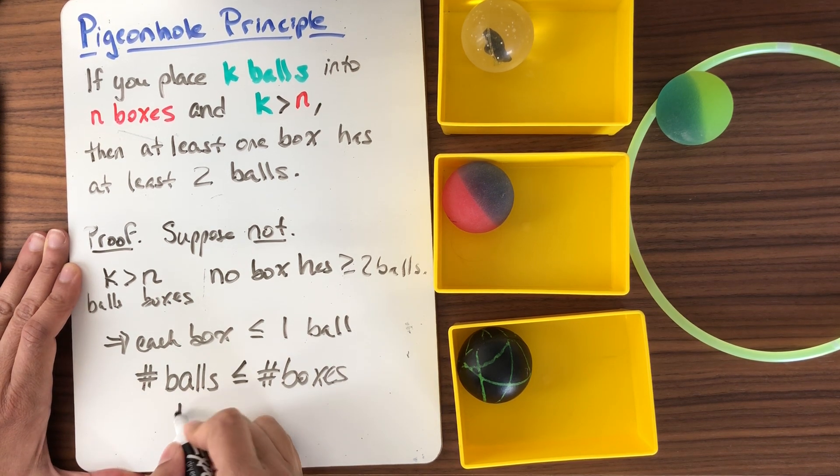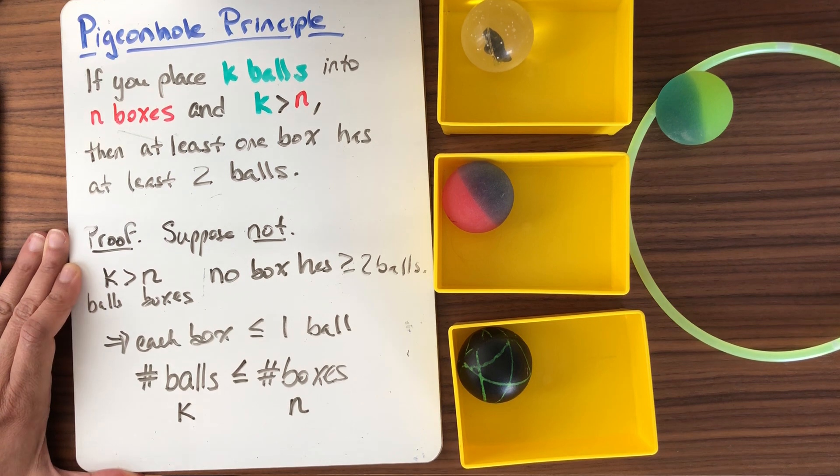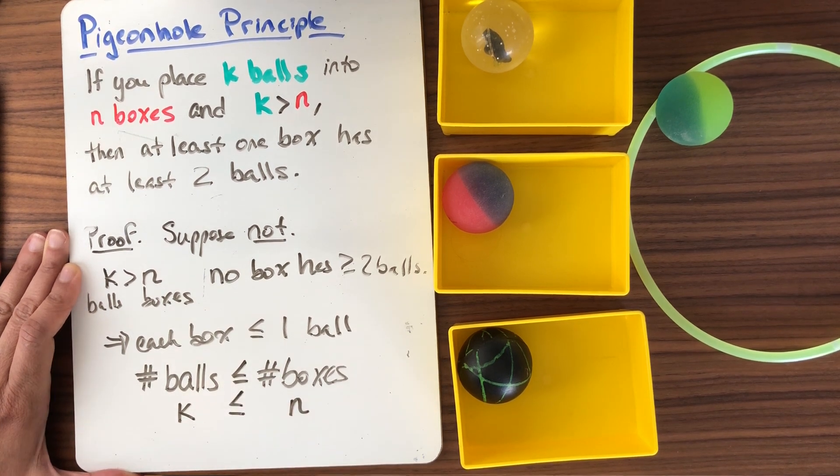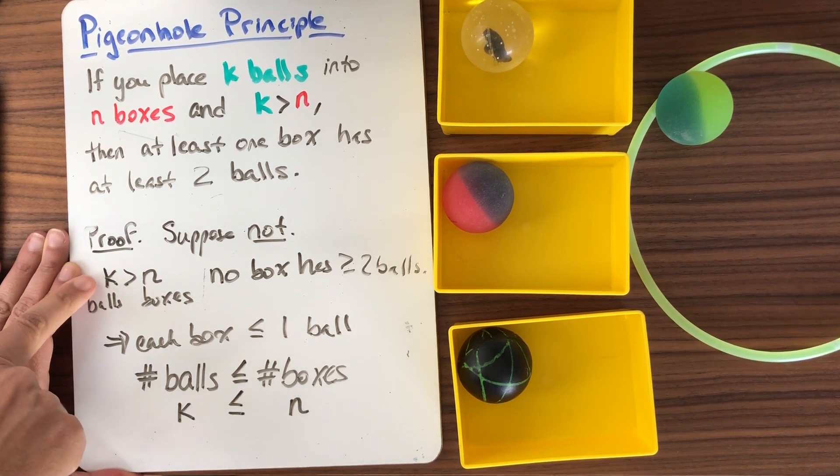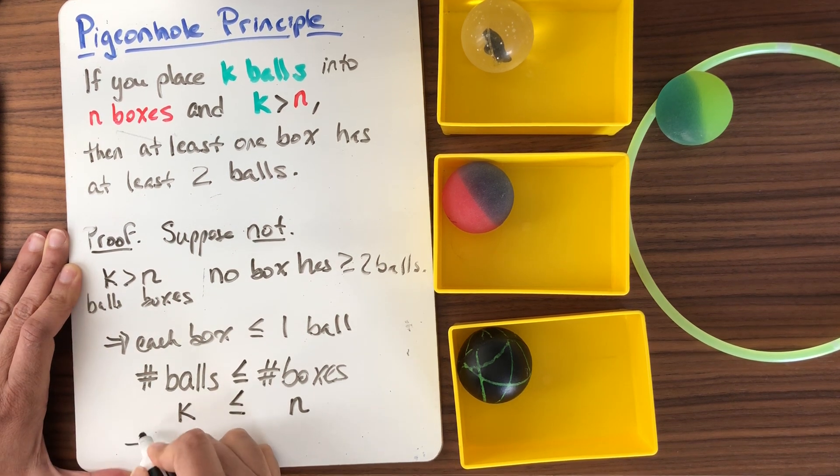So that means that the number of balls is less than or equal to the number of boxes. But the number of balls, this is what we're calling k. The number of boxes is this is what we're calling n. That means that k is less than or equal to n. But our hypothesis was that k was bigger than n. This is a contradiction.